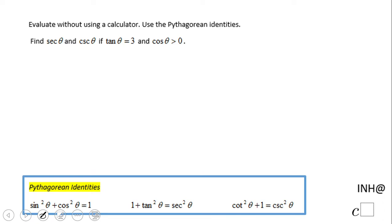Welcome or welcome back to Math at C squared. In this example we need to find secant and cosecant. The tangent is given as 3 and the cosine is positive. Notice they said use Pythagorean identity. We can also use a right triangle, but in this case we're going to use the Pythagorean identity.